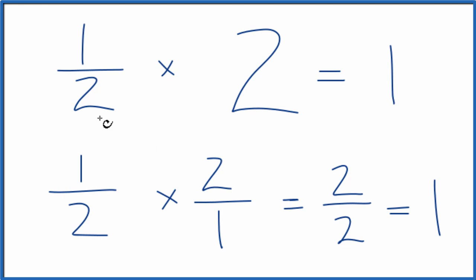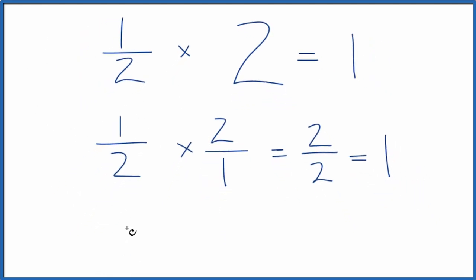Another way you could do this is you could convert 1 half to a decimal. So 1 half is 1 divided by 2. That's 0.5. Multiply that by 2. 0.5 times 2. That gives you 1.